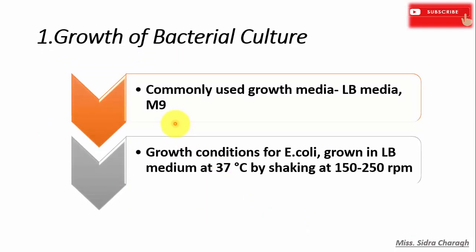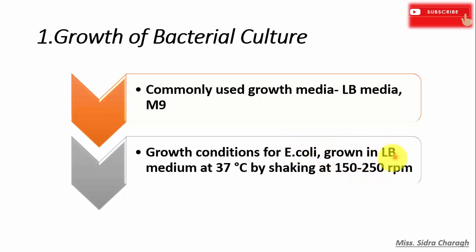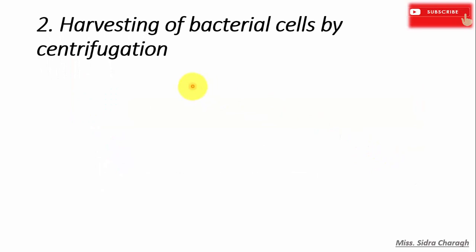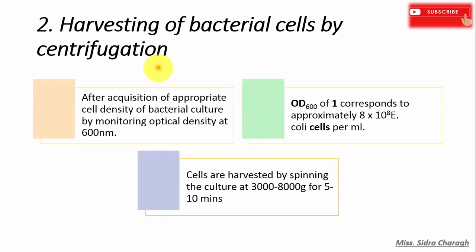In the growth of bacterial cell culture, we grow bacterial cells in media like LB media and M9 media. The growth conditions for E. coli cells are growing them at 37 degrees Celsius with shaking at 150 to 250 rpm. We grow E. coli cells in LB medium.